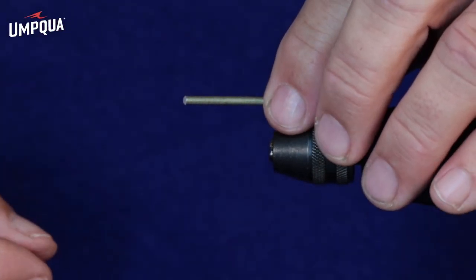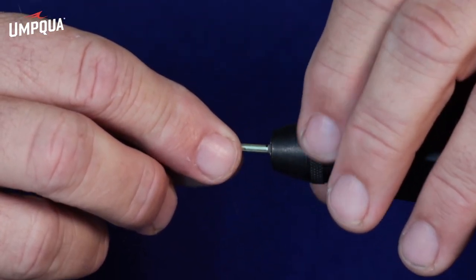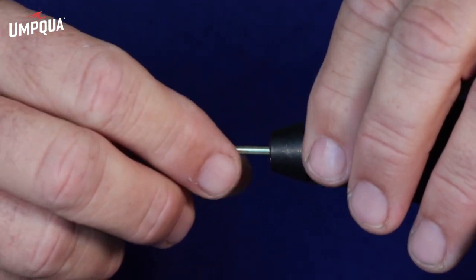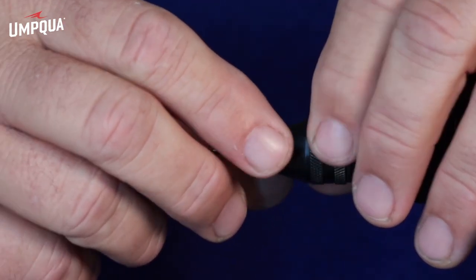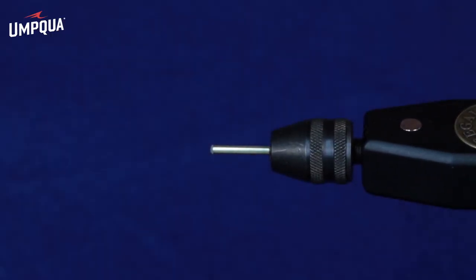You've got your tube all ready to tie on. So I'm going to insert it in my vise. Not very far. Just far enough that it gets a good hold. Clamp it down.